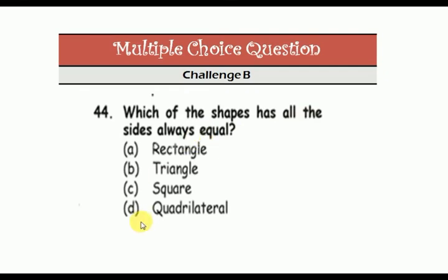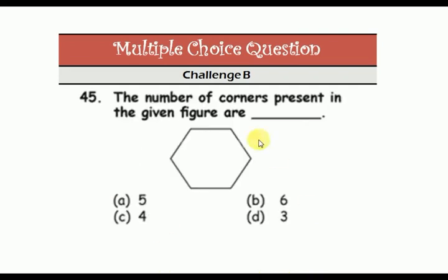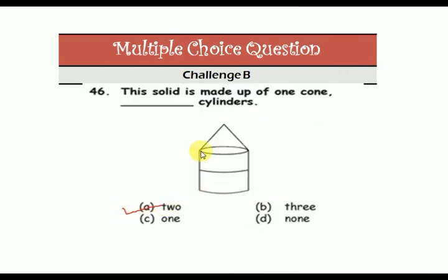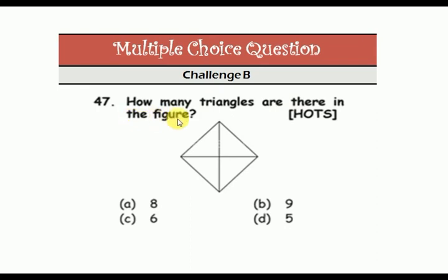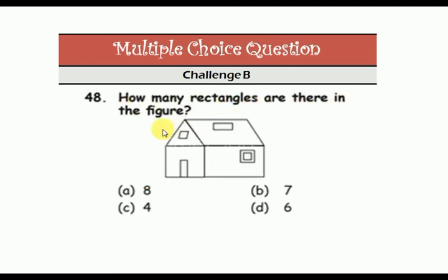The number of corners present in the given figure: one, two, three, four, five, six — six corners, made up of two shapes. How many rectangles are there in the figures? One, two, three, four, five, six, seven, and eight — the answer is eight rectangles.